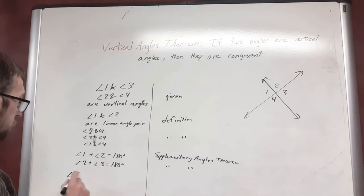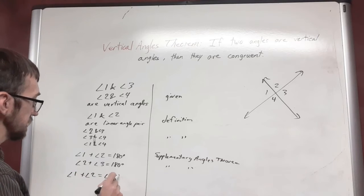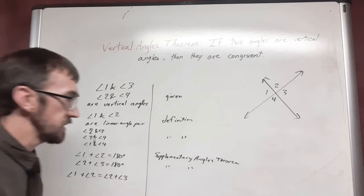So I have that angle one plus angle two is equal to angle two plus angle three by transitivity.